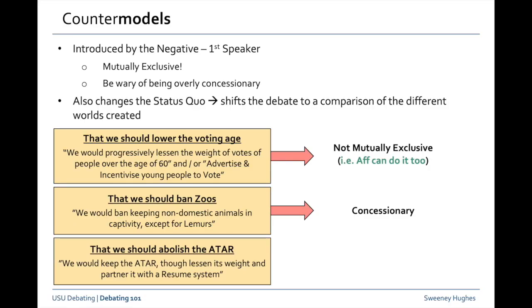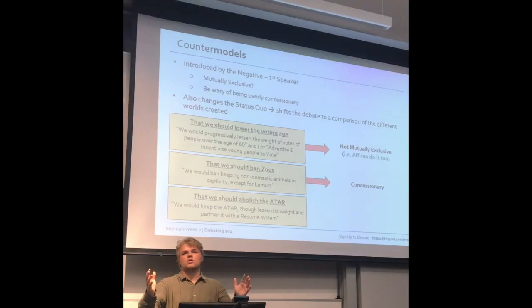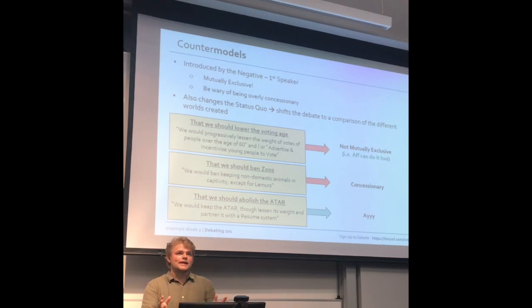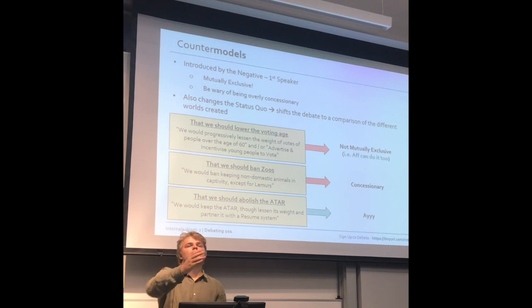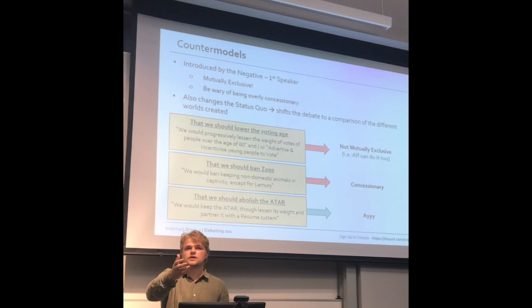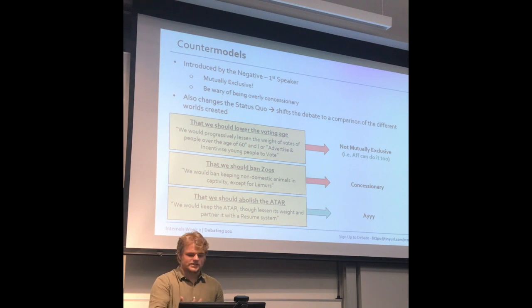If you get a topic that we should abolish the ATAR, you might say we would keep the ATAR, lessen its weight proportionally, and partner it with other sorts of systems. That's broadly a pretty reasonable counter model for the reason that you're doing something the affirmative team fundamentally can't do — you're still admitting the ATAR system is good. Although it could be argued that this model is a bit concessionary, if you're still fundamentally upholding the thing that you should be, that's probably sufficient.